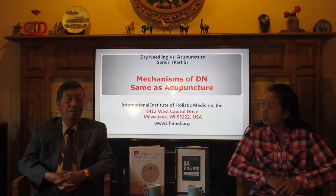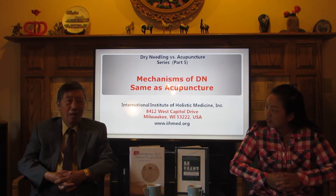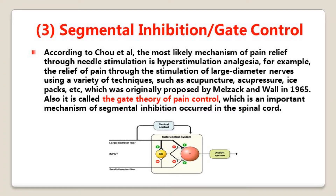How does dry needling or acupuncture affect the central sensitization? According to Chiu and colleagues, the most likely mechanism of pain relief through needle stimulation is hyper-stimulation analgesia. For example, the relief of pain through the stimulation of large diameter nerves using a variety of techniques such as acupuncture, acupressure, ice packs, and so on, was originally proposed by Melzack and Wall. Also, it is called the gate control theory of pain control, which is an important mechanism of segmental inhibition occurring in the spinal cord.